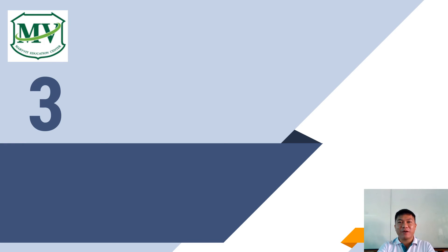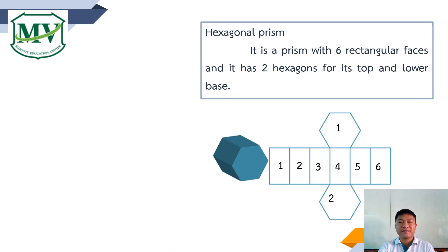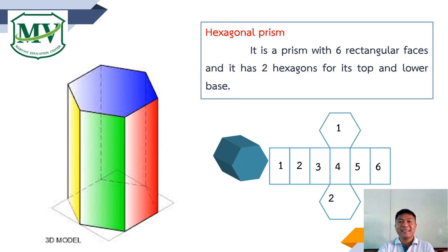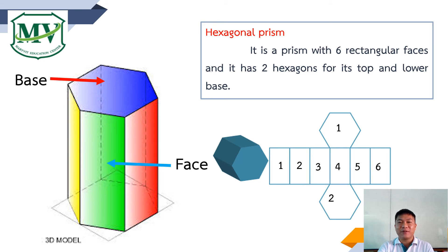The third type of prism is the hexagonal prism. It is a prism with six rectangular faces and two hexagons for its top and lower base. Here is the net of the hexagonal prism. As you can see, there are six rectangles and two hexagons representing its top and lower base respectively.